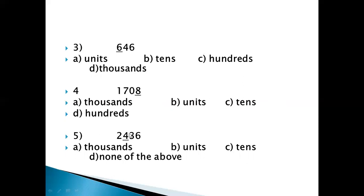Number 5 is 2436. The digit that is underlined is 4. Option A is 1000th, option B is units, option C is 10th, and option D is none of the above.